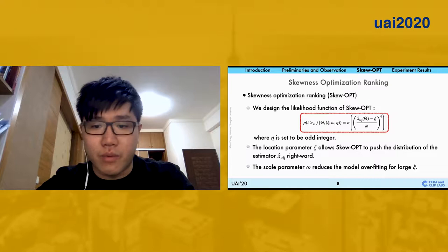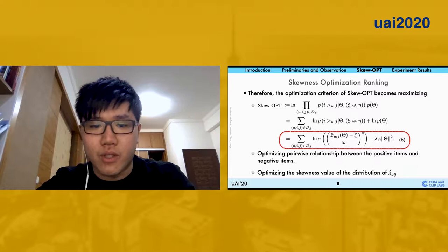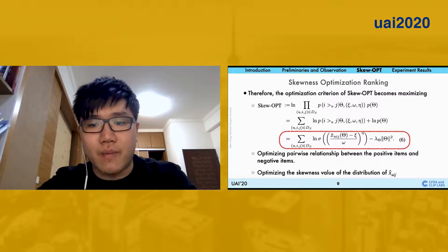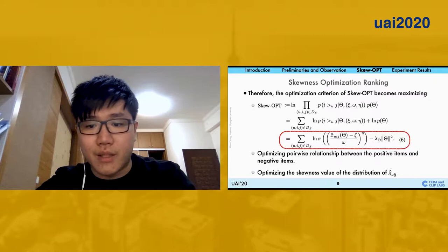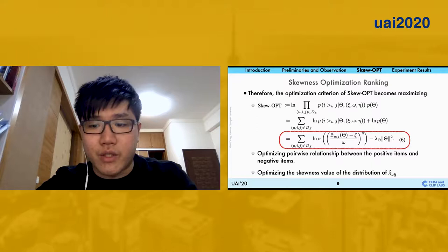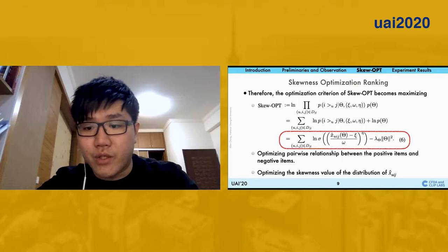With the design of the likelihood functions, equation 6 shows how we transfer our motivations into the optimization criterion of skewness optimizations. The skewness optimizations not only modify the pairwise relations, but also maximize the skewness value of the distributions. In the rest of the presentation, I'm going to briefly explain why skewness optimizations can reach to optimize the skewness value.